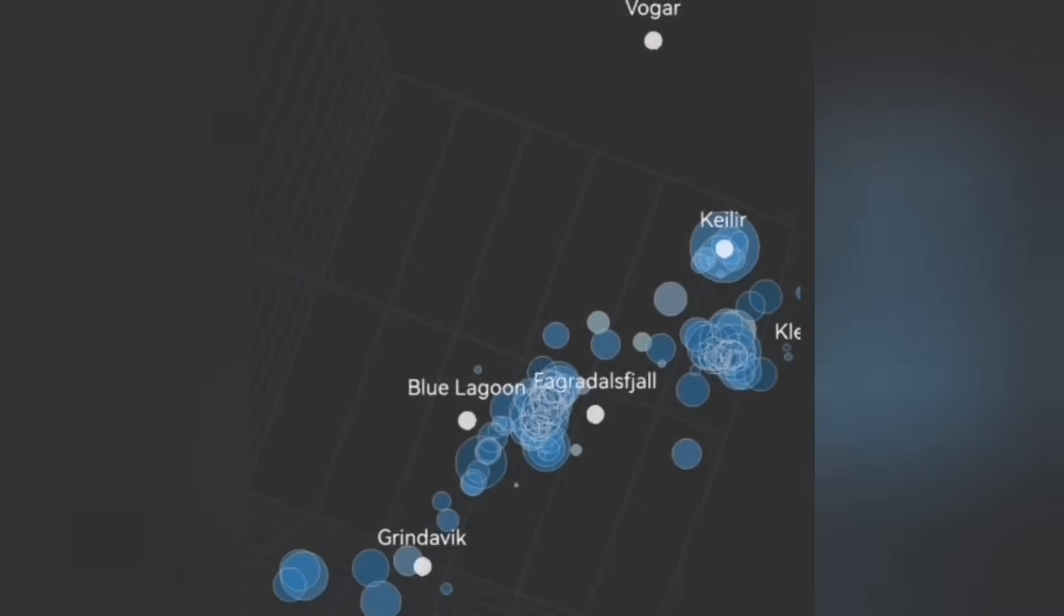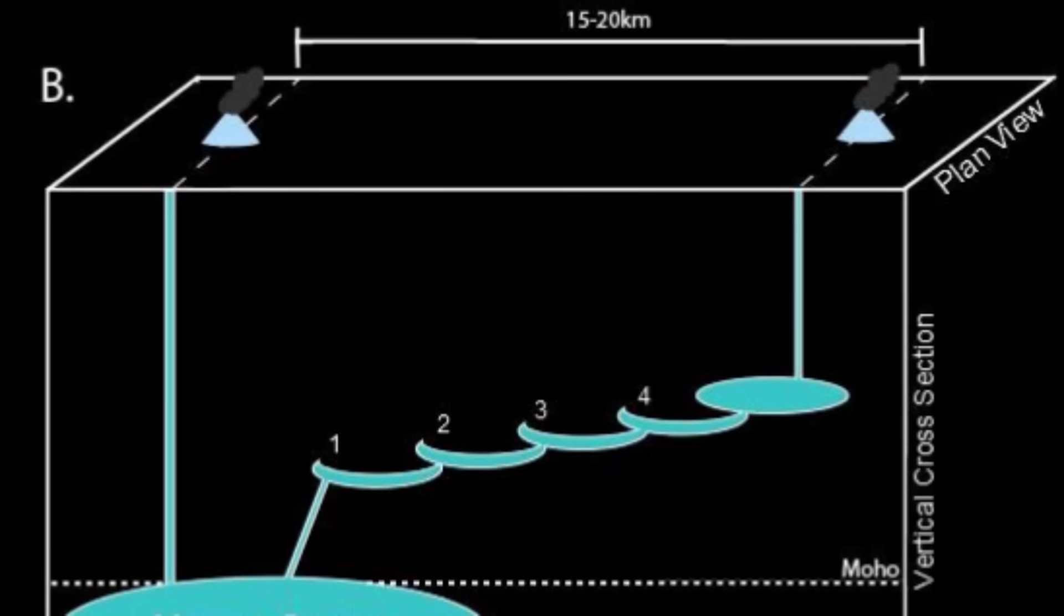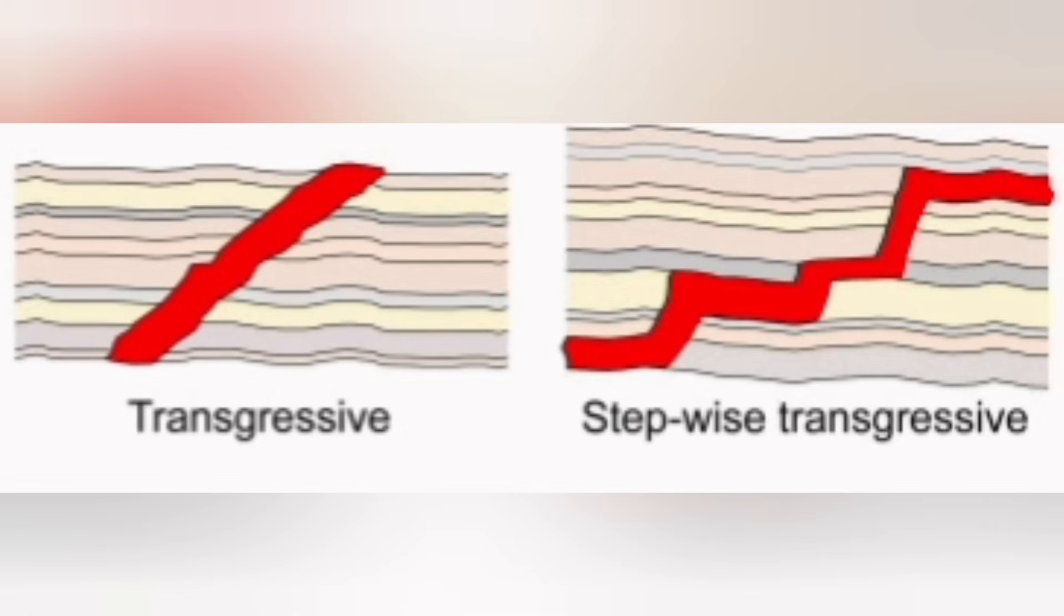This is the diagram or cartoon showing what I mean by this transgressive seal moving from what is Svartsengi at an angle toward the town of Grindavik, the vicinity, north part of it.